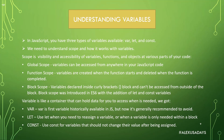A variable is like a container that can hold data for you to access when it is needed. Var is the first variable historically available in JavaScript, but now it's generally recommended to avoid. Then there is let — you should use let when you need to reassign the variable or when the variable is only needed within a block. And then there's const — you should use const for variables that should not change their value after being assigned. Let's talk a little bit more about it with some examples.